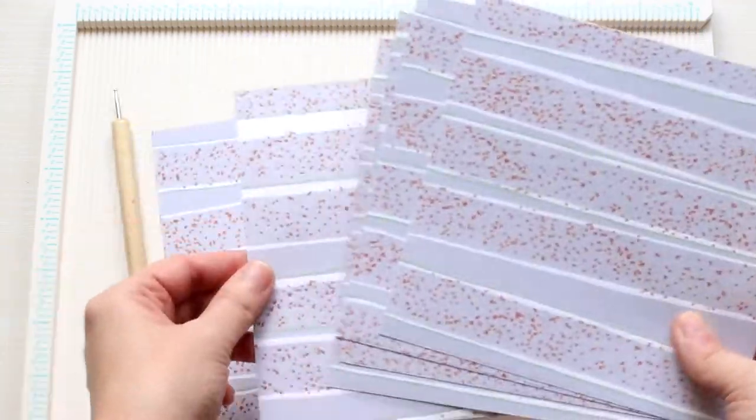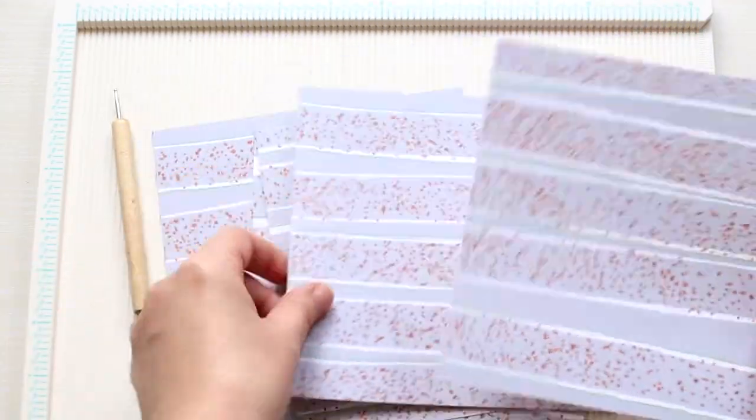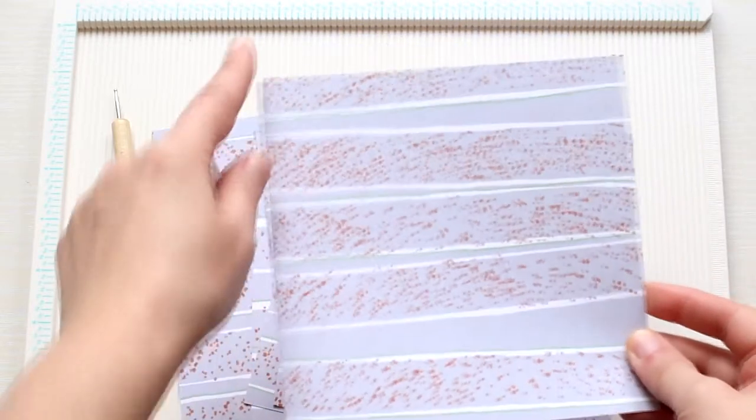I cut the 12 by 12 inch paper into six squares measuring six by six inches.